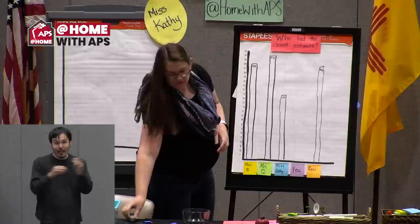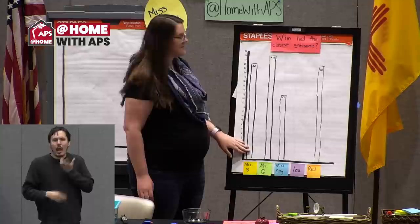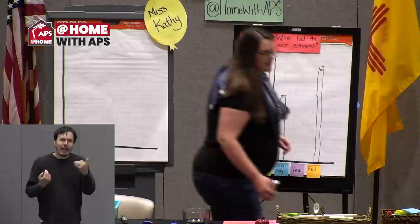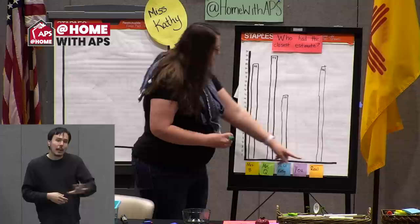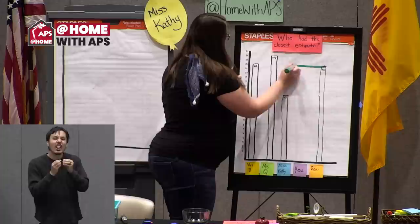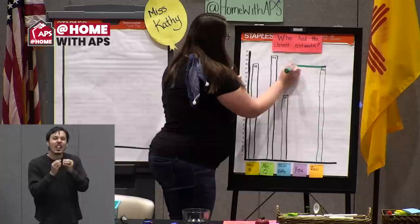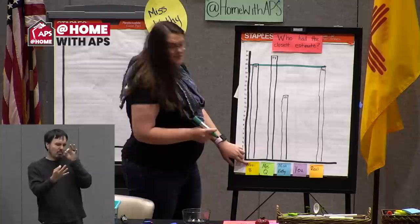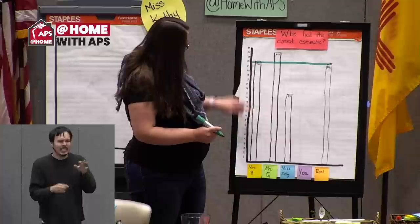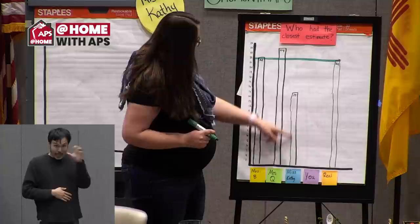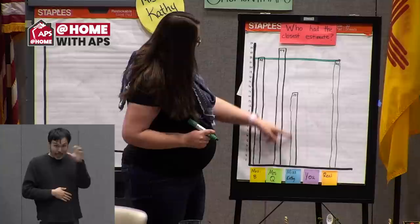Mathematicians, this is where we can use the information in our graph to answer the question. Graphs should have a title that helps you look at it for information. The real answer was 22. We can see who was closest — that was Mrs. B, of course; she got it exactly correct. Who was next closest? Mrs. Q was really close. Whose estimate was farthest away? That was Miss Kathy — I had the estimate farthest away from what it really was. Graphs can help us answer questions.